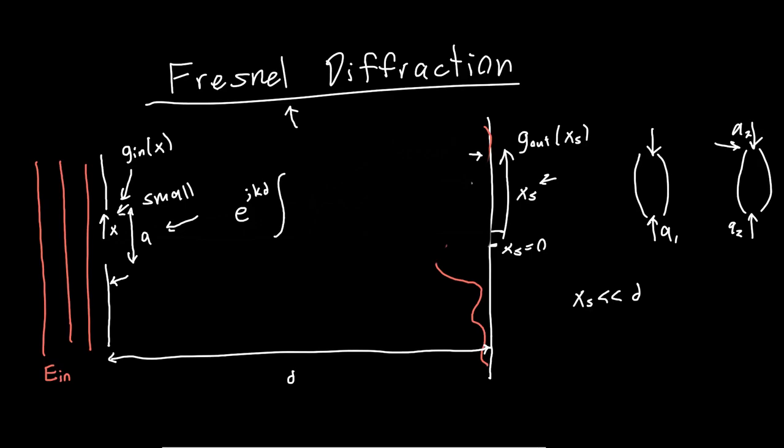So with Fraunhofer diffraction, or after we made the paraxial approximation, we wrote the overall electromagnetic field. So g_out as a function of x. So we wrote g_out as a function of x as this e to the i, or e to the j k d over d. And there's also some extra factors out here. j lambda is the extra factor, but I'm going to ignore those for now, and just call everything out front A_0. So we just don't have to deal with it, because it's not horribly important.